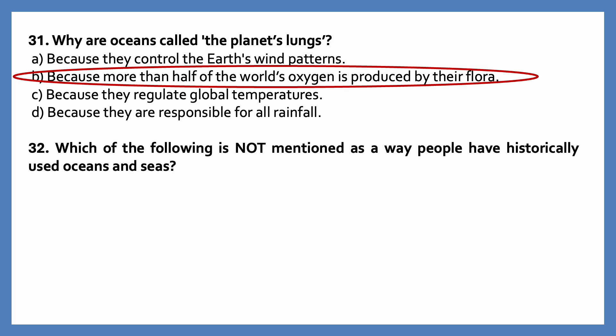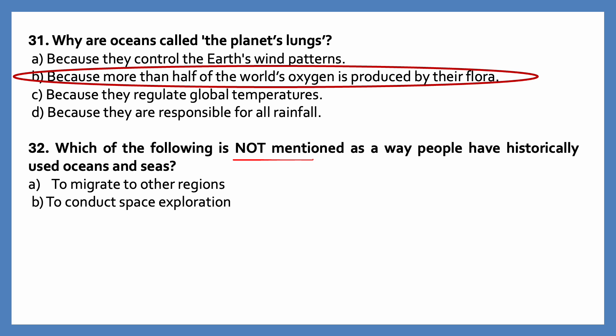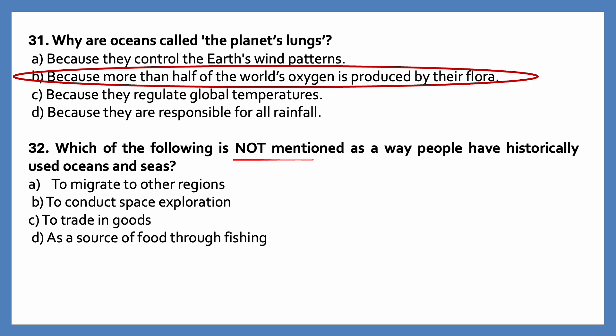Which of the following is not mentioned as a way people have historically used oceans and seas? Options are: to migrate to other regions; to conduct space exploration; to trade in goods; as a source of food through fishing.